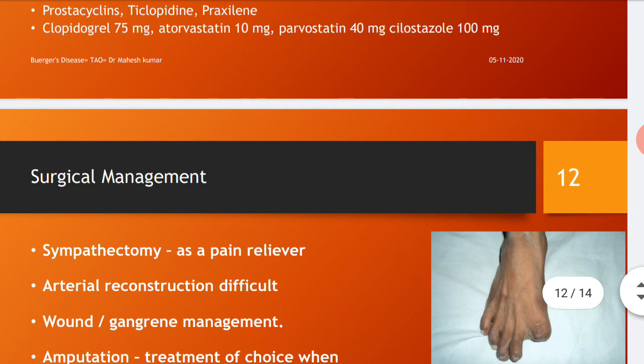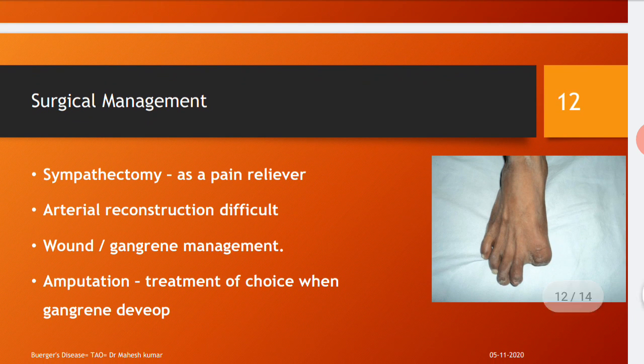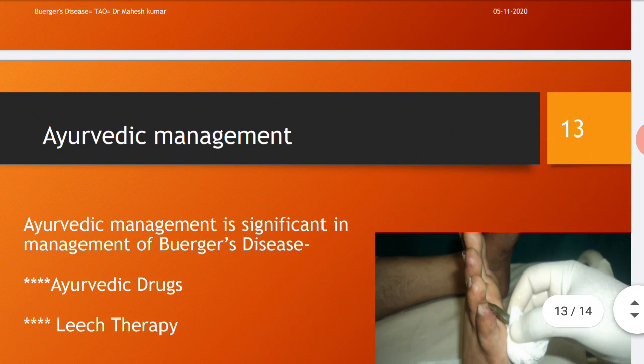Surgical management includes sympathectomy as a pain reliever. Arterial reconstruction is very difficult given the damage during the progressive phase. Wound and gangrene management are advised. Amputation is the treatment of choice when gangrene develops, as gangrenous changes destroy particular fingers or hands, and amputation is adopted to save the patient's life.